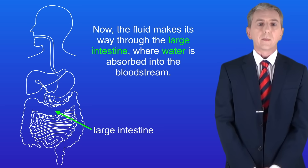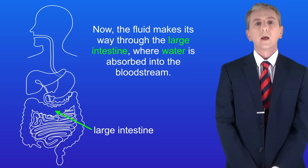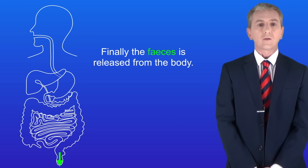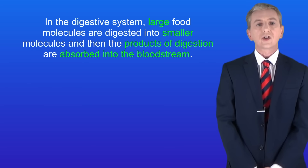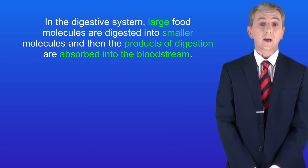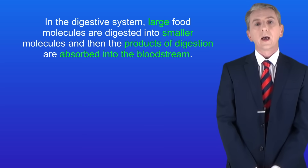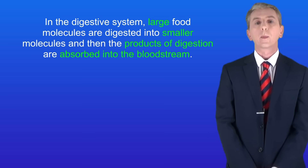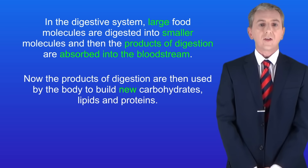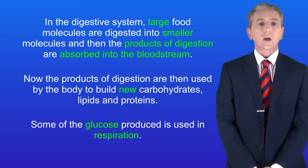The fluid then makes its way through the large intestine, where water is absorbed into the bloodstream, and finally the feces is released from the body. Remember that in the digestive system, large food molecules are digested into smaller molecules, and then the products of digestion are absorbed into the bloodstream. The products of digestion are then used by the body to build new carbohydrates, lipids and proteins, and some of the glucose produced is used in respiration.